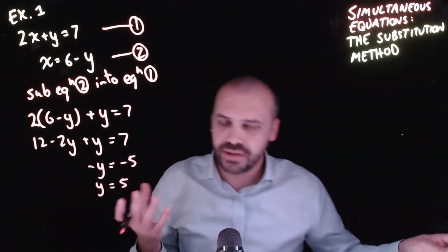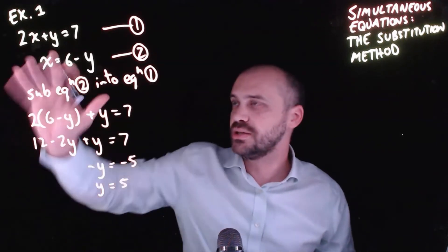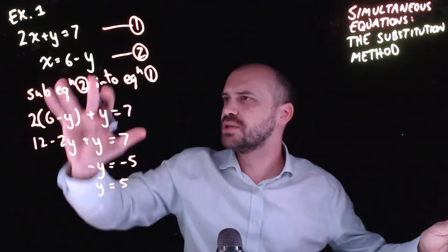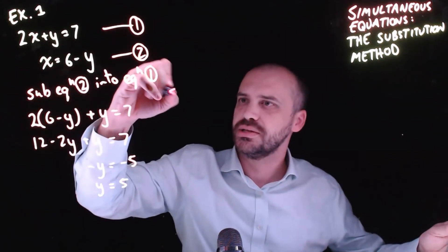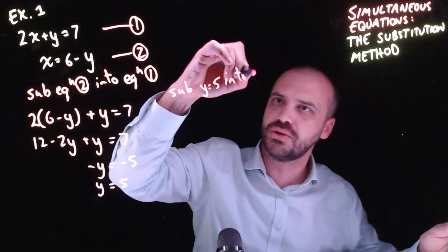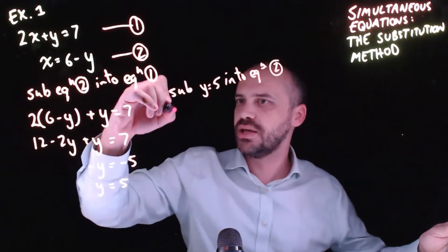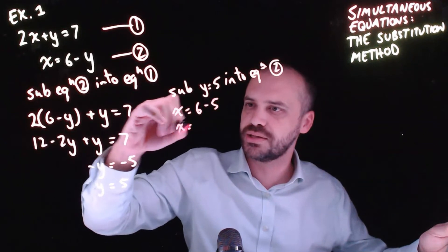And now that I've done that, I'm not finished. I need to sub this value into one of my equations. It would be smart to put it into equation two because that'll spit x out directly. Sub y = 5 into equation two. All right, so that's x = 6 - 5 = 1.